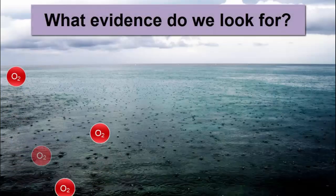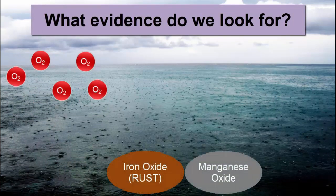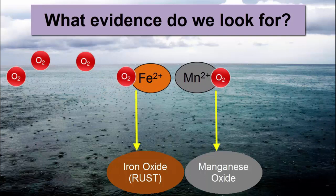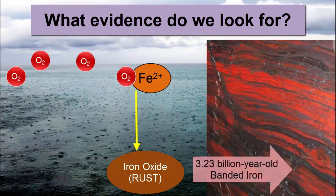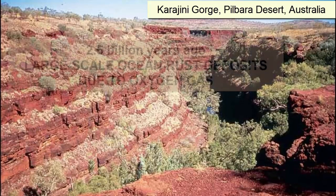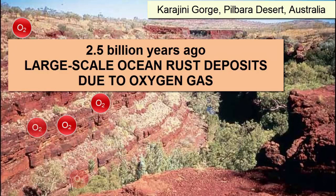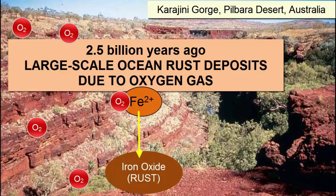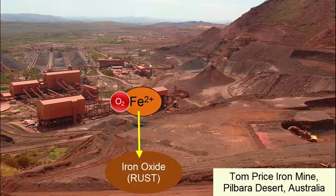What evidence would we look for to tell us oxygenic photosynthesis had evolved? Minerals such as manganese or iron oxides that form through chemical reactions between oxygen gas and either dissolved metals in the oceans or metals in weathering surface rocks on land. While as far back as 3.23 billion years ago there appear to be small localized precipitations of iron oxide minerals on the seafloor, now visible in layered rocks known as banded iron formations, additional evidence suggests those were formed as a byproduct of anoxygenic photosynthesis by bacteria that used iron as an electron donor. However, the largest known deposit of banded iron formations have been determined to be due to a large-scale release of oxygen by photosynthetic stromatolite colonies. These deposits are about 2.5 billion years old and can be found today in the Pilbara region of Western Australia.